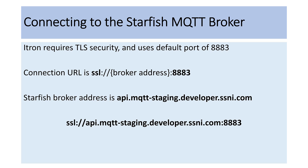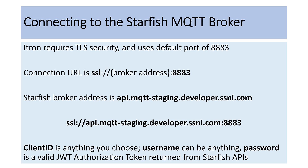Thus, the full URI is listed here with the SSL, the broker address, and the correct port. Other parameters used as part of the connection to the broker include the client ID, which can be any string you choose, the username, which since we're using JWT tokens can be anything, and the password, which is a copy of a valid JWT authorization token returned from the Starfish APIs.